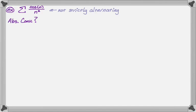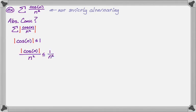So is it absolutely convergent? First thing you do is throw absolute values around the nth term — now it's the sum of the absolute value of cosine of n over n squared. The absolute value of cosine of n is less than or equal to one, because cosine is stuck between negative one and one, and it's positive because it's absolute value. So dividing everything by n squared, the absolute value of cosine of n over n squared is less than or equal to one over n squared, and also greater than or equal to zero. Since that inequality holds, the sum of the absolute value of cosine of n over n squared is less than or equal to the sum of one over n squared. At this point I've basically done a direct comparison.